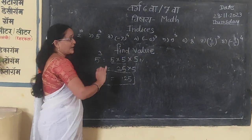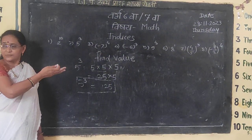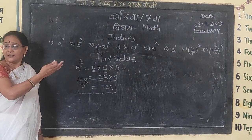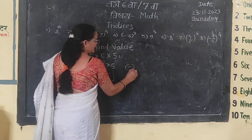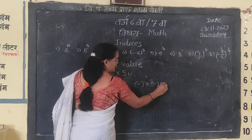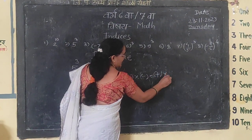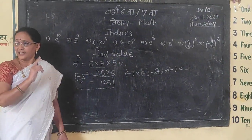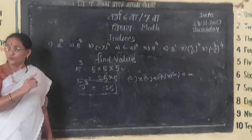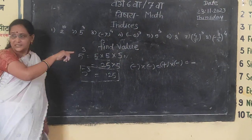If you understand, the base is minus and the index is equal to 4. When the base is negative and the power is an even number, the result is positive. When the base is negative and the power is an odd number, the result is minus.